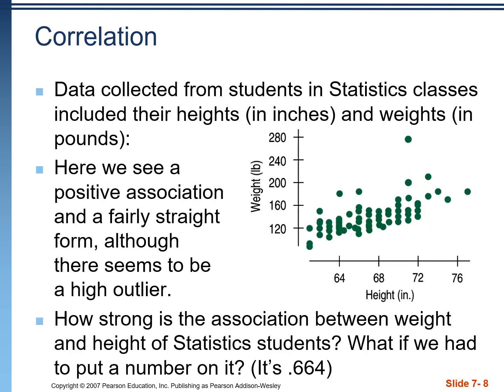Let's take all that information and look at this scatterplot of the heights and weights of a number of statistics students. We've chosen height to go on the x-axis — this is the explanatory variable — and weight is the response variable. This makes sense because as we grow, our weight is going to increase with each inch of height; our height is explaining and predicting our weight. When asked to describe it with FUDS: the form is linear, unusual features — we have one point up there that is far away from the others, direction is positive, and strength is moderate to strong — moderately strong.